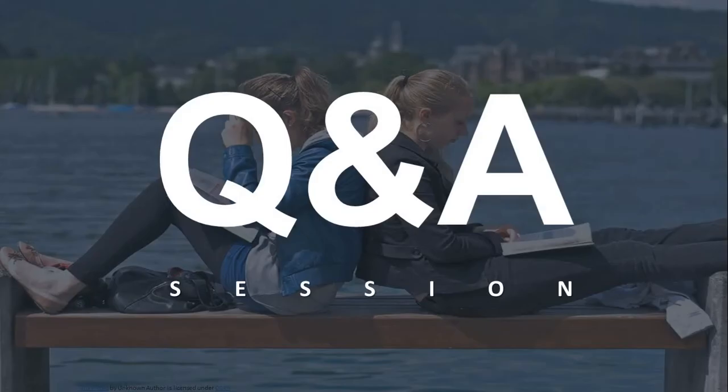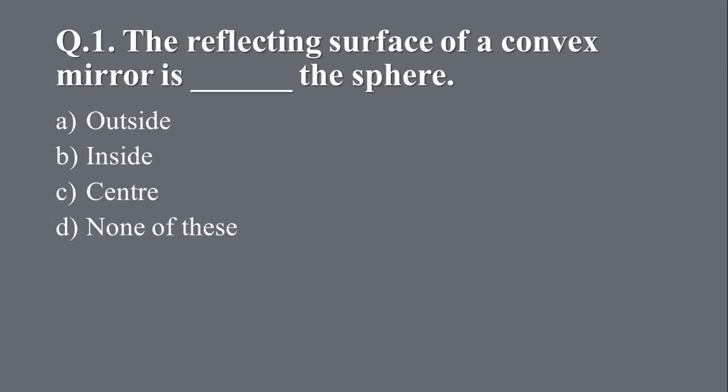Now let us revise what we have learned today by answering the following questions. Question 1: The reflecting surface of a convex mirror is blank the sphere. Your options are A outside, B inside, C center, D none of these. And the right answer is A, outside.